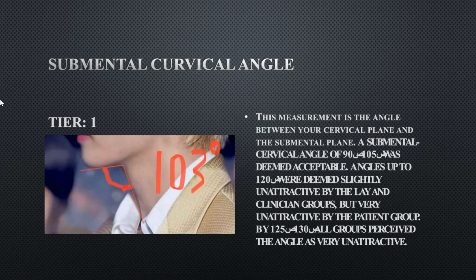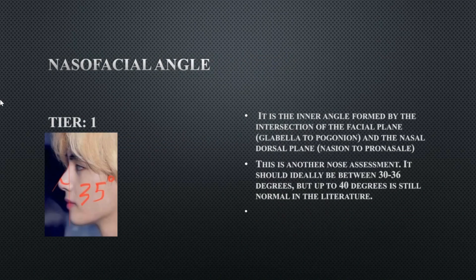His submental cervical angle — which determines how high his hyoid is — shows he has no submental fat underneath the chin, and it's tier 1, which is perfect. His nasal facial angle is tier 1 at 35 degrees, which is perfect. It should be between 30 and 36 degrees and determines the relationship between the nose and chin, from the nasal bridge down to the chin, without taking facial convexity into account.